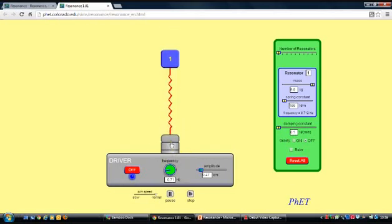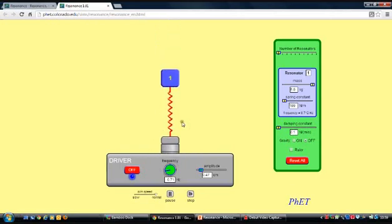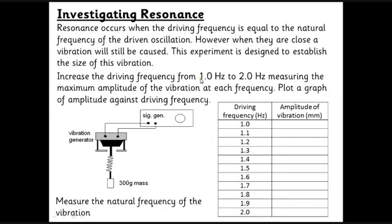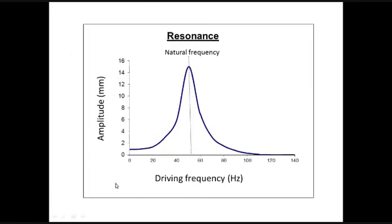This gives us a crucial graph. If you've understood all this, you'll be able to understand a graph of the amplitude of the oscillation against the driving frequency — it's very important to know what's on each axis. The amplitude is on the vertical axis and the driving frequency on the horizontal axis.